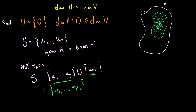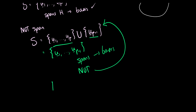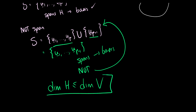If the expanded set now spans H, then we have a basis. If not, we repeat the process, expanding until we get a basis. The reason the dimension of H is always less than or equal to the dimension of V is that we're pulling vectors from V. If V has n linearly independent vectors, the subspace can never get more than n linearly independent vectors, so dim H ≤ dim V.